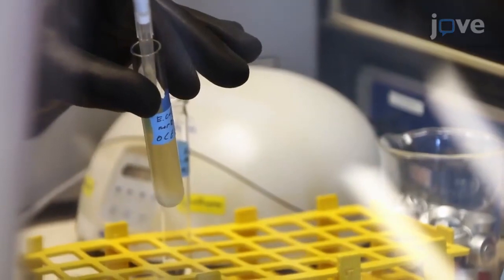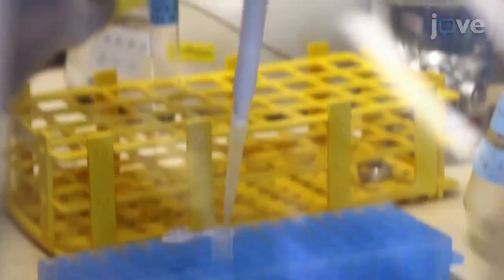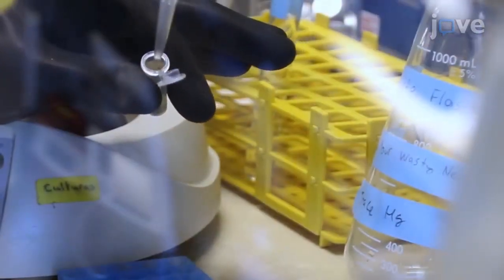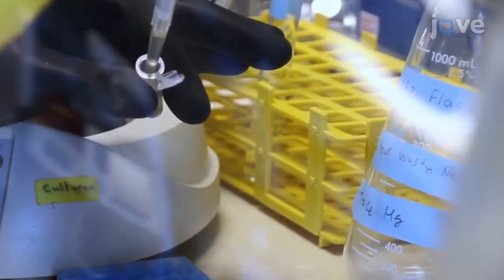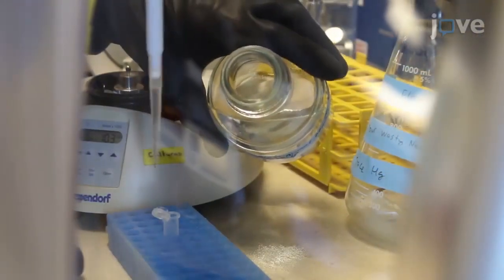Now collect 2 milliliters of the overnight grown culture and transfer into a 2 milliliter microcentrifuge tube. After centrifuging at 10,000 RCF for 90 seconds, remove the supernatant and resuspend in 2 milliliters of fresh growth medium.